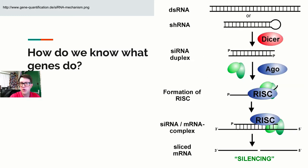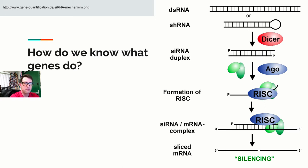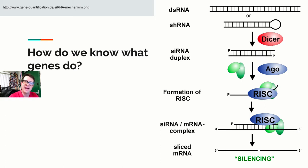Another approach to figuring out gene function is called a knockout, using RNA interference (RNAi). You create a small interfering RNA (siRNA) that targets and destroys a specific mRNA, disabling that gene's expression. Then you watch what happens to the cell — what deficit does it now have? Based on what goes wrong when you remove the gene, you can figure out what that gene normally does.